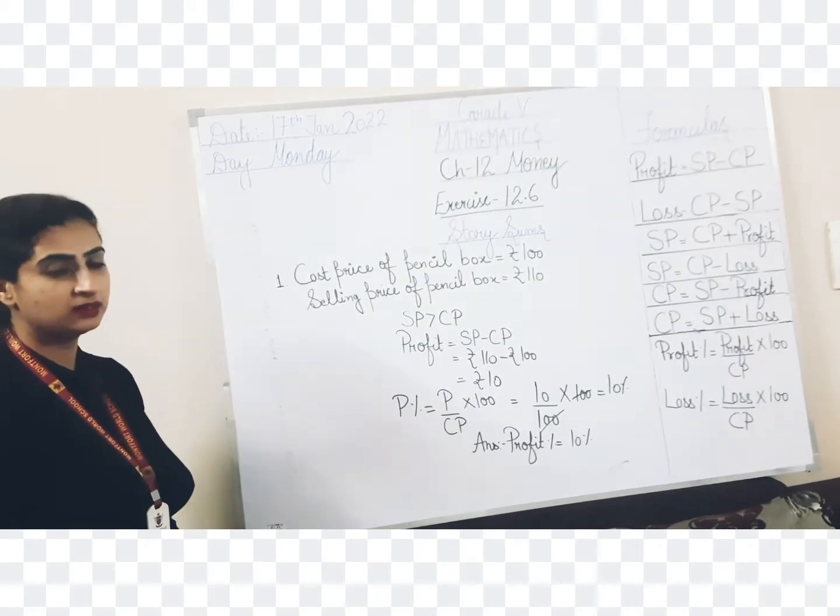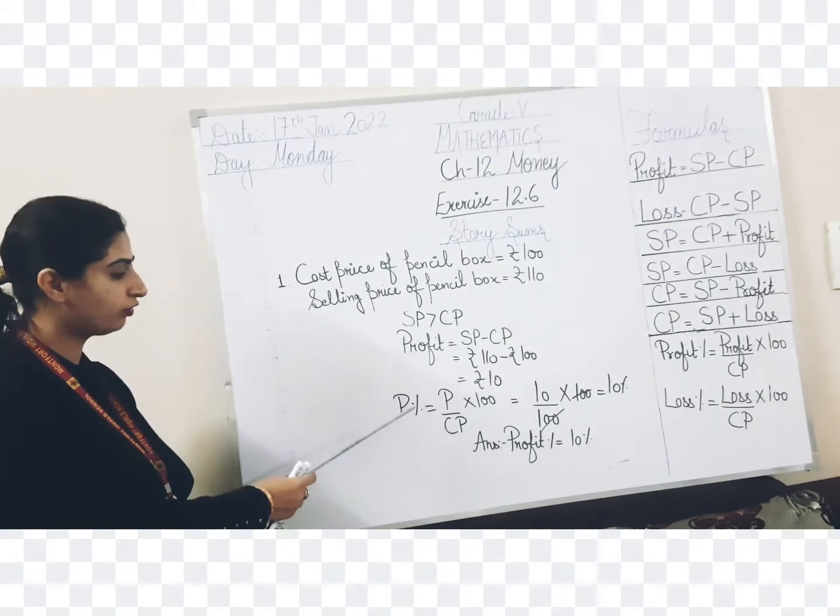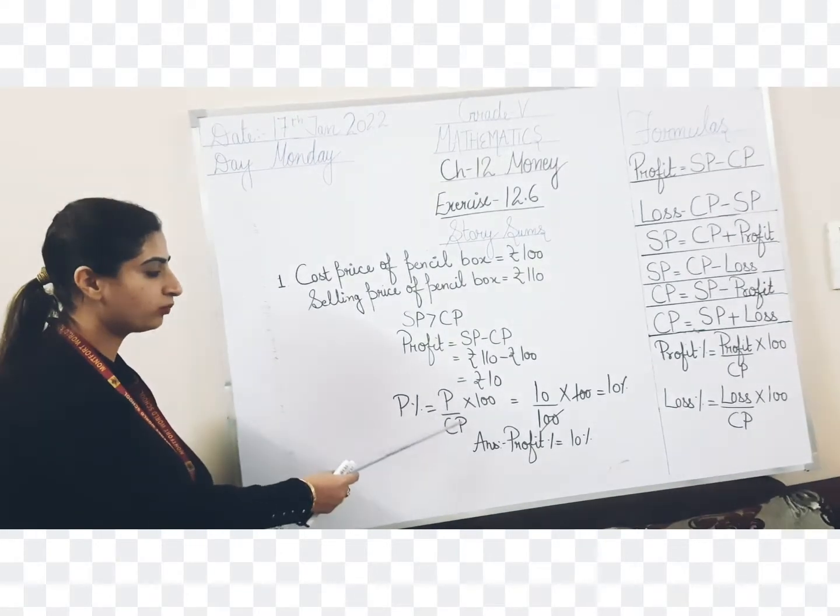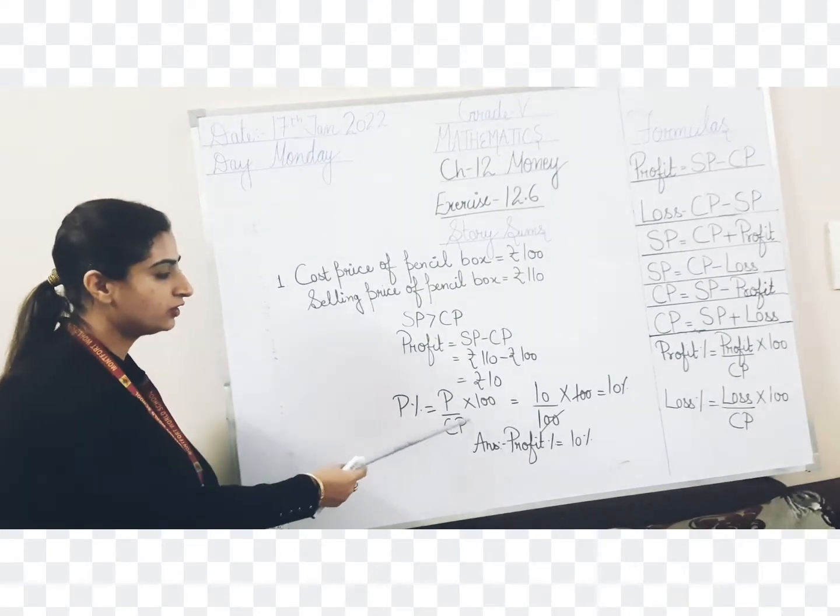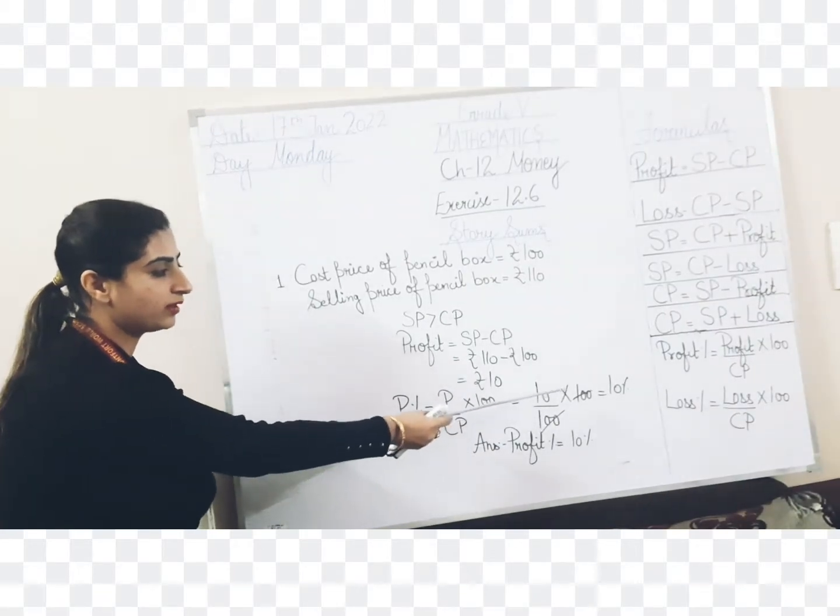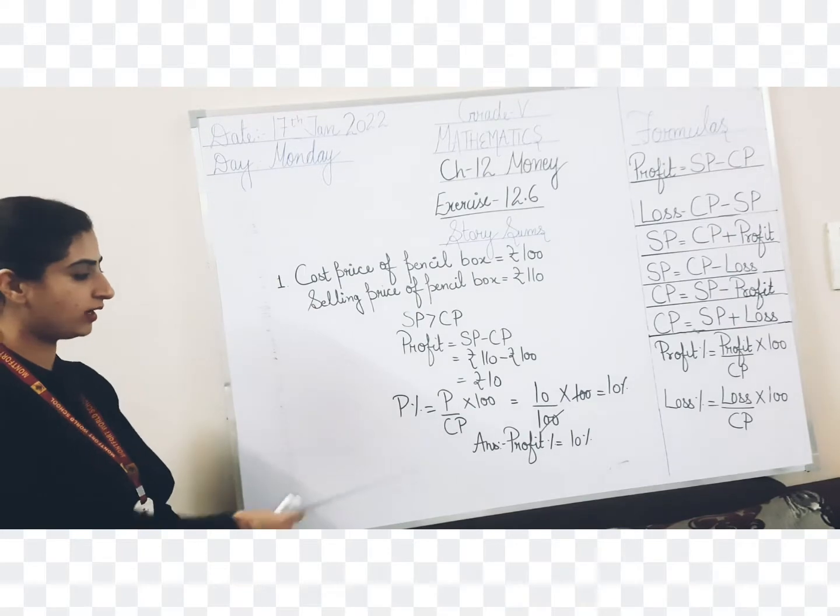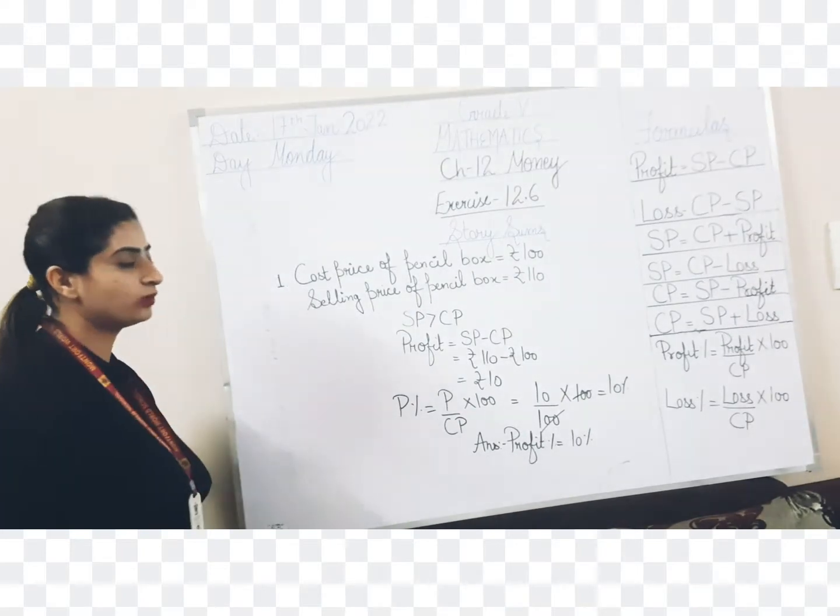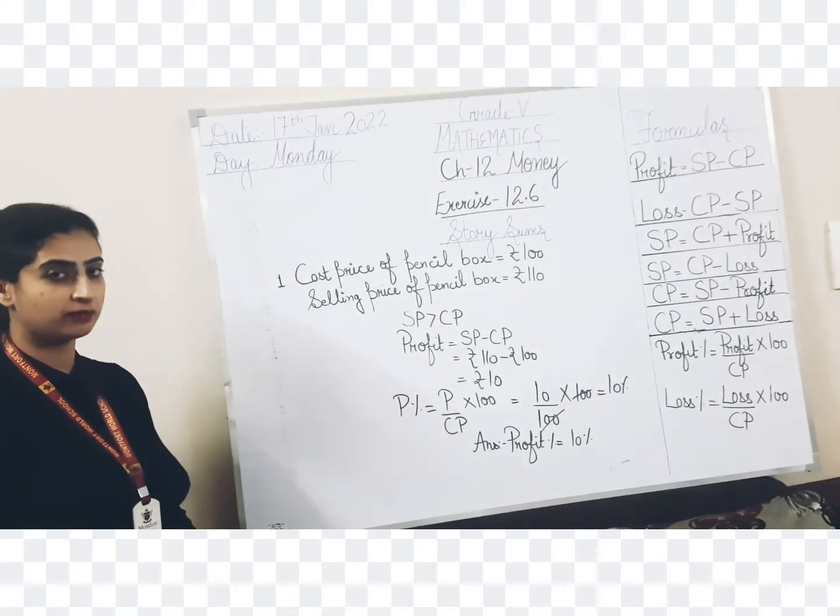So profit is SP minus CP, and when we calculate it comes out to be rupees 10. Now the next step is just put it in the formula. Formula is profit percent is profit upon CP multiply 100. So profit is 10, cost price is 100 multiply 100 that gives you 10%. So answer is profit percent equals to 10%.